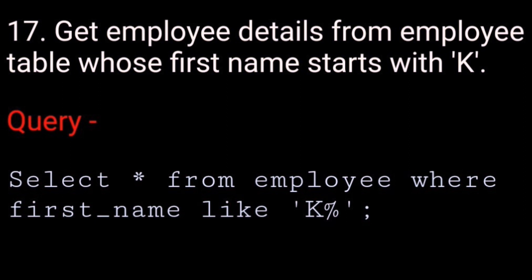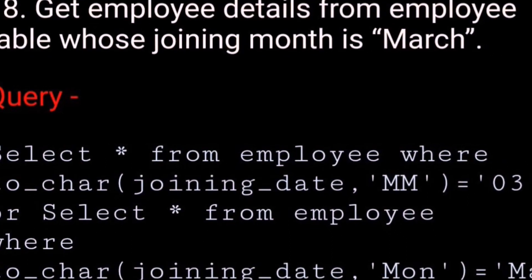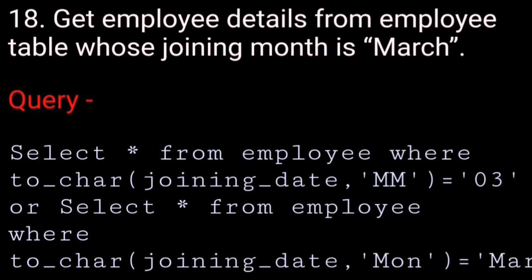Get employee details from the employee table whose first name starts with 'K'. SELECT * FROM employee WHERE first_name LIKE 'K%', or SELECT * FROM employee WHERE TO_CHAR(joining_date, 'MM') = '03', or SELECT * FROM employee WHERE TO_CHAR(joining_date, 'MON') = 'MARCH'.